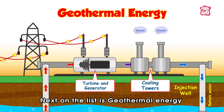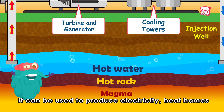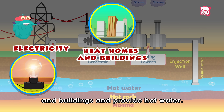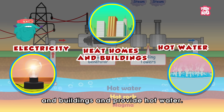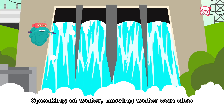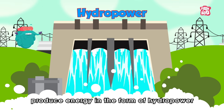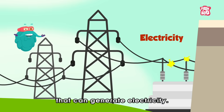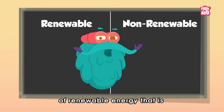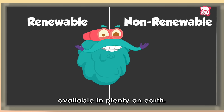Next on the list is geothermal energy, which comes from the heat inside the earth. It can be used to produce electricity, heat homes and buildings, and provide hot water. Speaking of water, moving water can also produce energy in the form of hydropower, which can generate electricity. It is one of the oldest and largest sources of renewable energy available in plenty on earth.